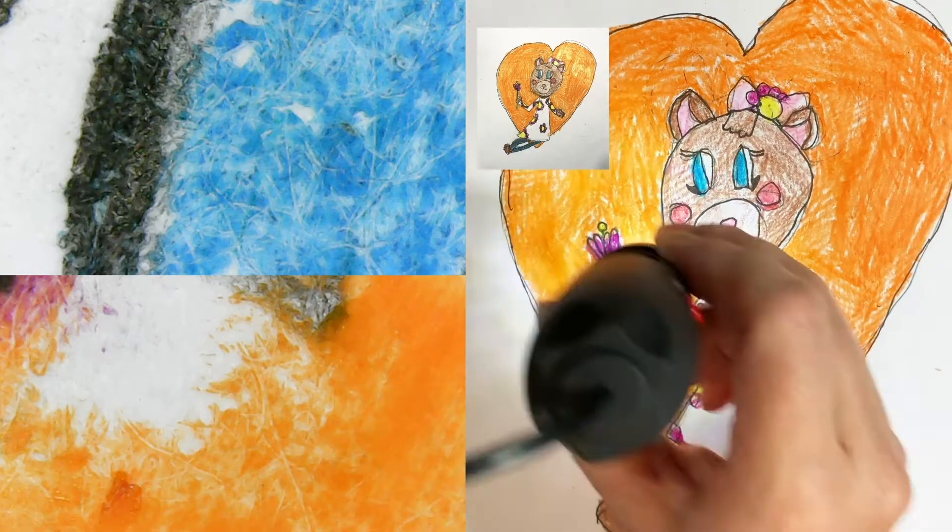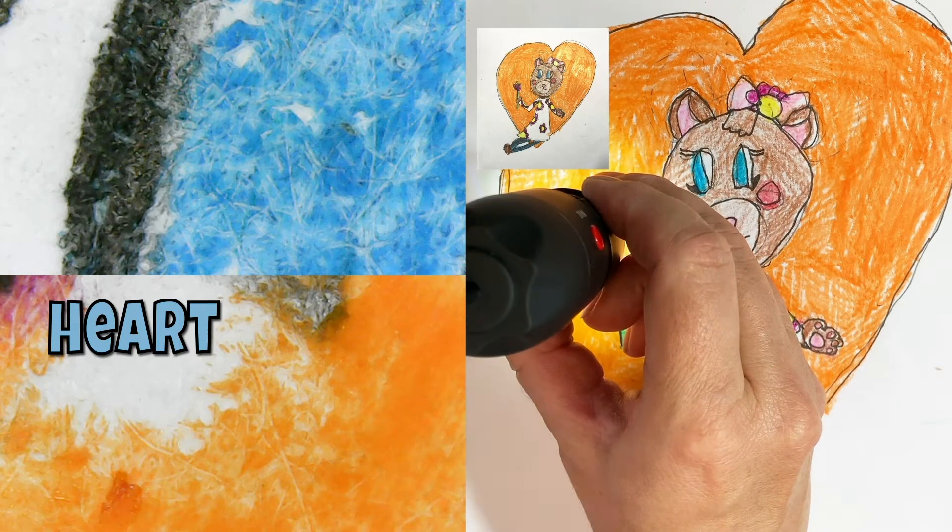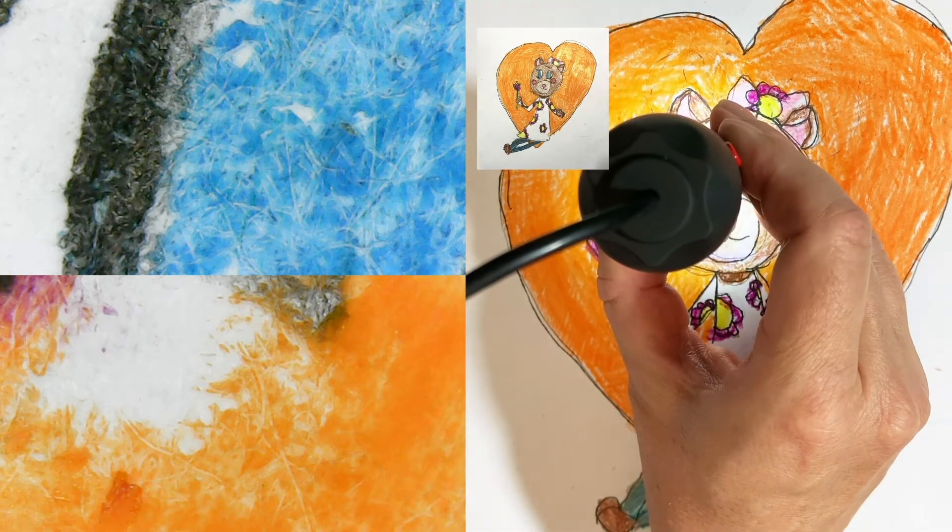You can tell it's a little waxier. So that's her eye on the top, and then that's part of the heart. Trippy, huh?